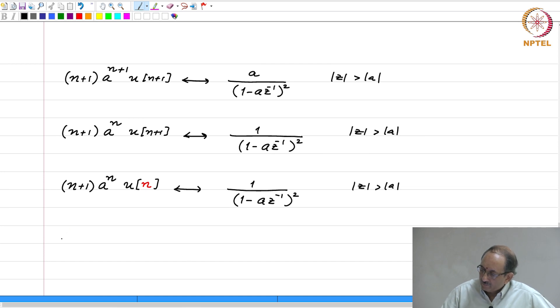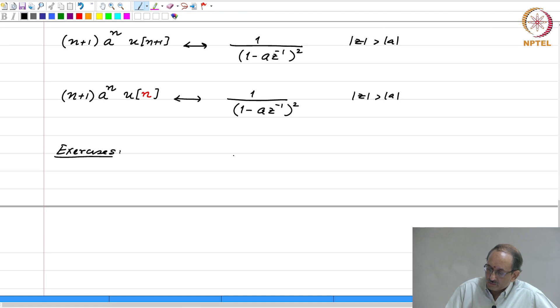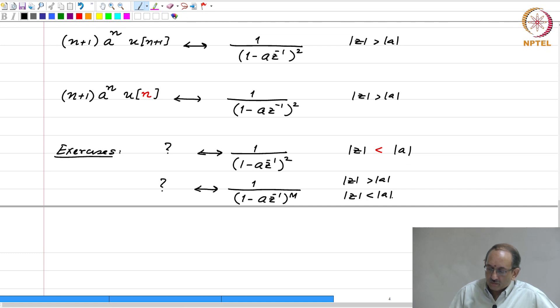So, as exercises 1 by 1 minus a z inverse whole squared, the region of convergence is now mod z less than mod a. So, you need to figure this out and then 1 by 1 minus a z inverse power m, again two cases here mod z greater than mod a mod z less than mod a. For each of these cases, it is important that you derive this. And the way you do this is, you apply the differentiation property to 1 by 1 minus a z inverse whole squared. You apply the differentiation property to this transform.